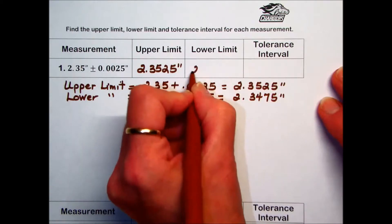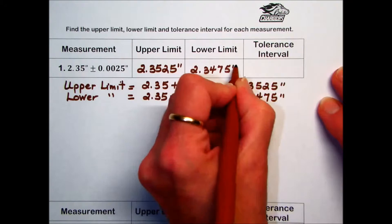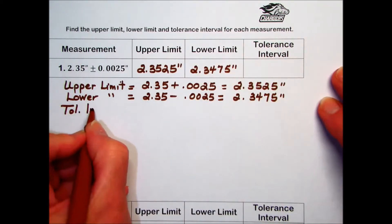This would be the shortest length that still would be acceptable. To determine the tolerance interval,